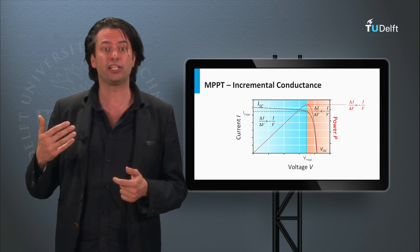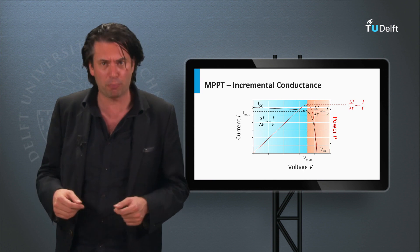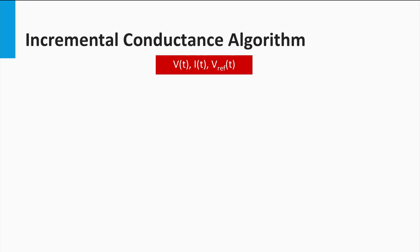The algorithm compares the incremental conductance with the instantaneous conductance and decides if the operating point is to the left or to the right of the maximum power point. In this example we see a conceptual flowchart of the incremental conductance MPPT algorithm. The instantaneous voltage and current are the observable parameters, while the instantaneous voltage is also the controllable parameter. V_ref is the voltage value forced on the PV module by the MPPT device, and it is the latest approximation of the maximum power point voltage.